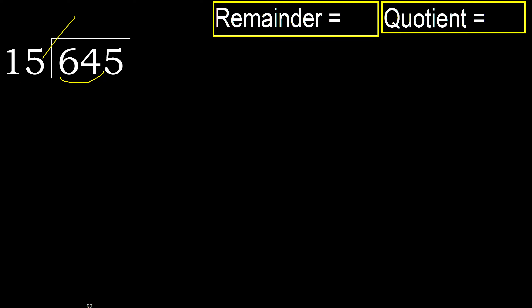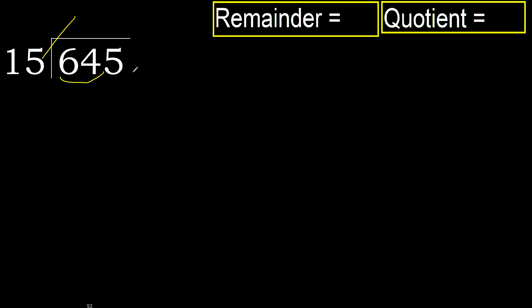15 multiplied by which number is nearest to 64 but not greater? 15 multiplied by 5 is greater, so multiplied by 4: 60, which is not greater.